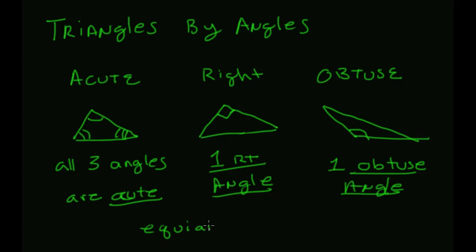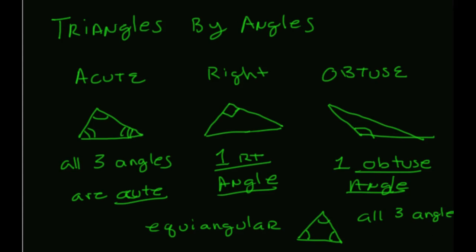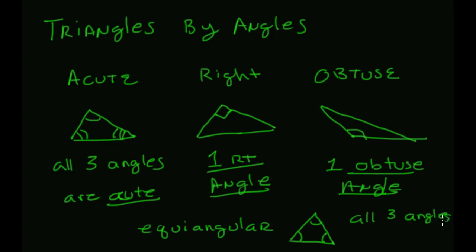One more classification: a triangle can be equiangular. An equiangular triangle has all three angles congruent — they're all the same size. So: an acute triangle has three acute angles, a right triangle has one right angle, an obtuse triangle has one obtuse angle, and an equiangular triangle has three congruent angles.